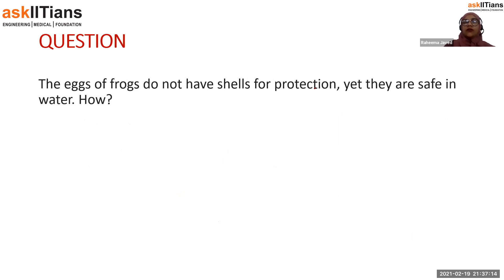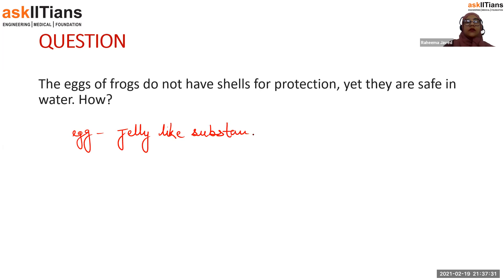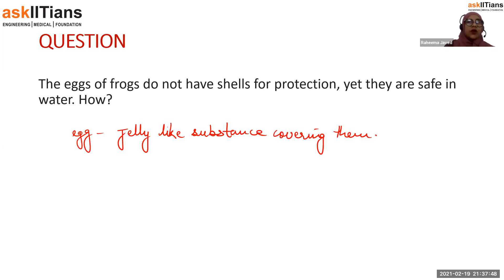The eggs of frogs do not have a shell for protection, yet they are safe in water. The eggs have a jelly-like substance covering them. This jelly-like substance keeps them moist and prevents desiccation — prevents them from drying up. If the frog laid eggs on land, they would get dried up and die. The egg nucleus is not exposed directly to water; it still has a jelly-like covering which protects it.